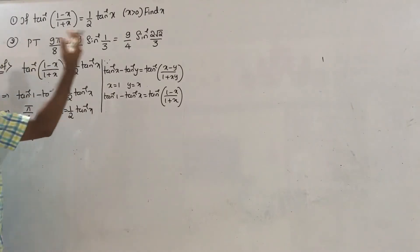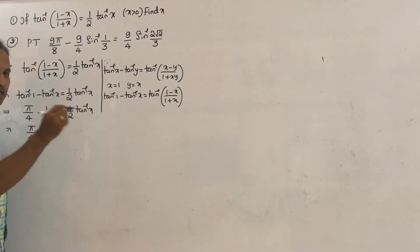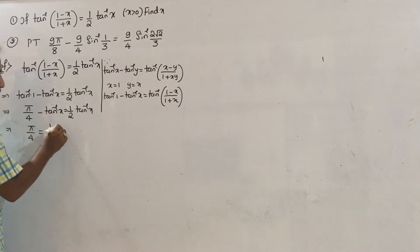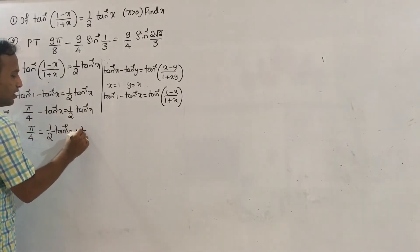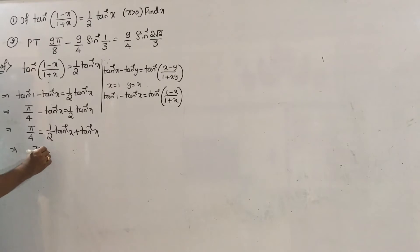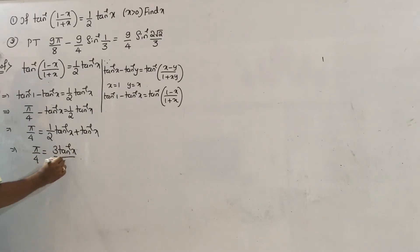So pi by 4 is as it is. Moving terms: pi by 4 equals one half tan inverse x plus tan inverse x, which gives pi by 4 equals 3 tan inverse x divided by 2.